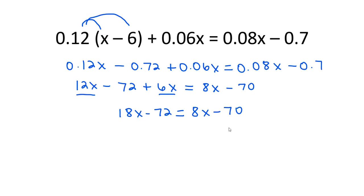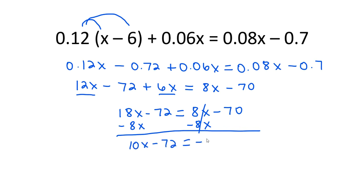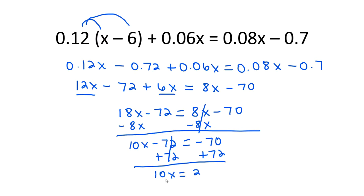At this point, it doesn't matter what we move. I'm going to move the 8x — since it's a positive 8x, I'm going to subtract 8x from both sides. That gives me 10x minus 72 equals negative 70. Now I want to isolate the variable, so I need to move the negative 72 over to the other side by adding 72. So I have 10x equals 2, divide by 10. And that leaves me with x equals 2 over 10. Since 2 is the biggest number that will divide into both 2 and 10, I reduce: 2 divided by 2 is 1, and 10 divided by 2 is 5. So my answer is 1 fifth.